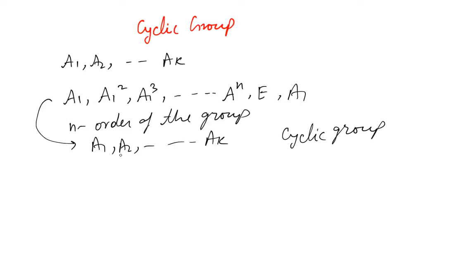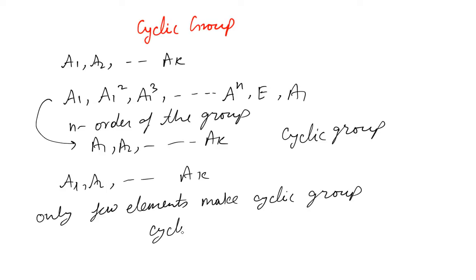But it may happen that even for a bigger group such that a1, a2 and so on up to ak, only few elements make a cyclic group. Then this is called a cyclic subgroup.